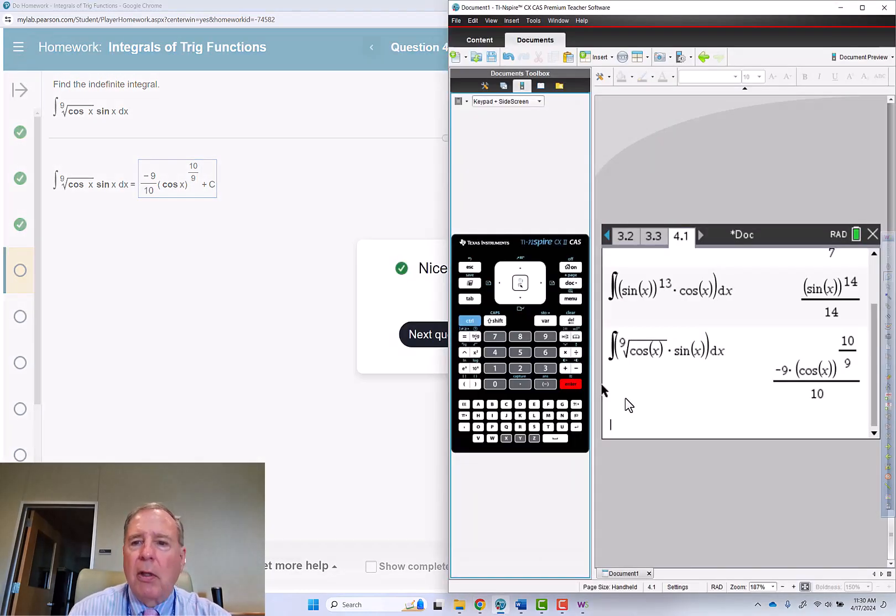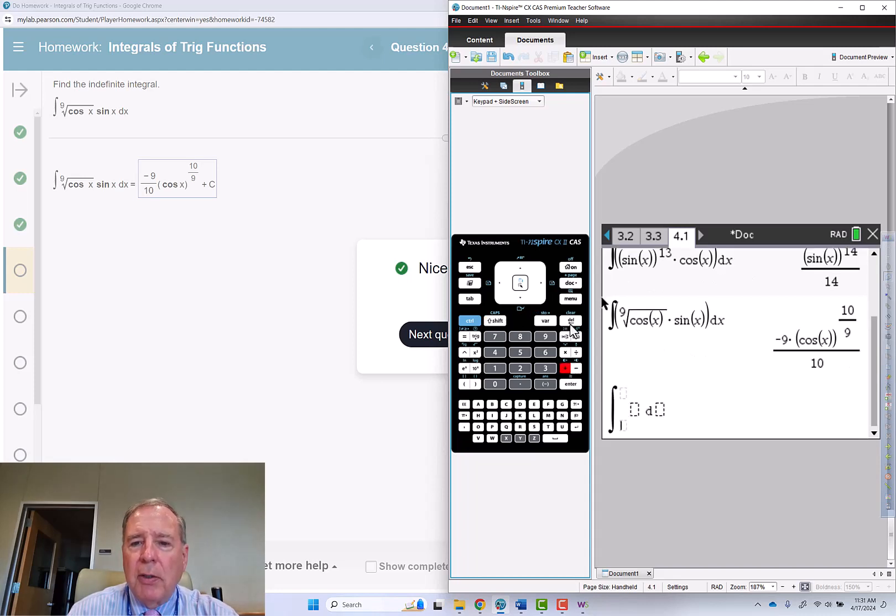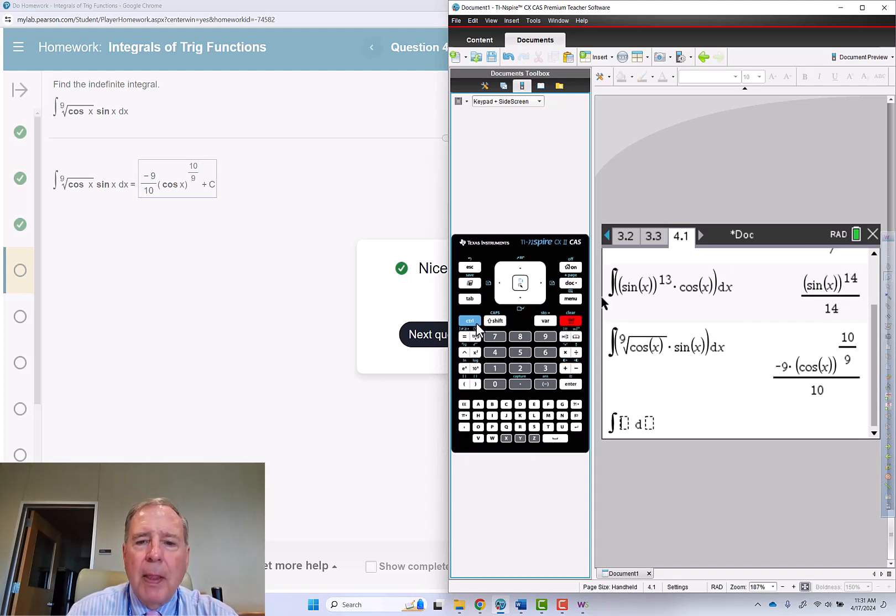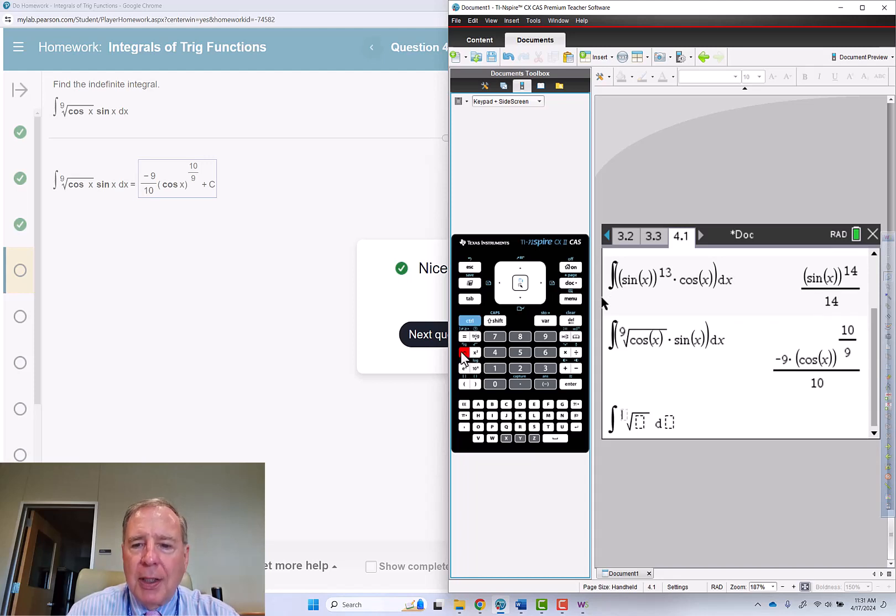Could we do that in the calculator? Absolutely. Shift plus. Delete to get rid of the limits. And I'm going to go control rooftop to get the nth root of.